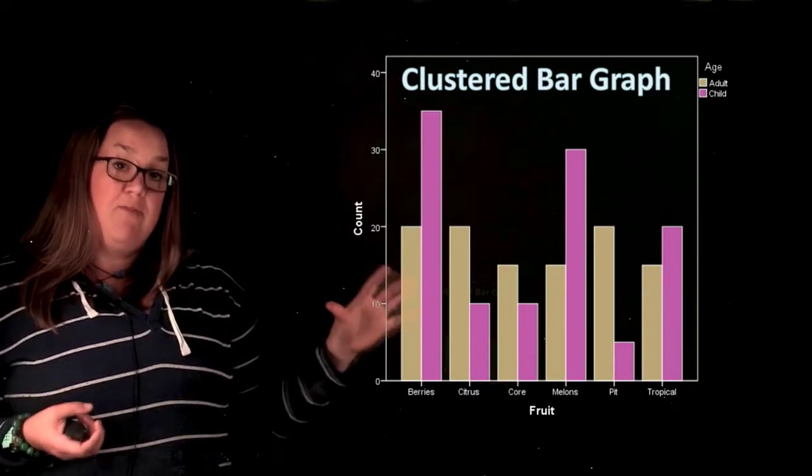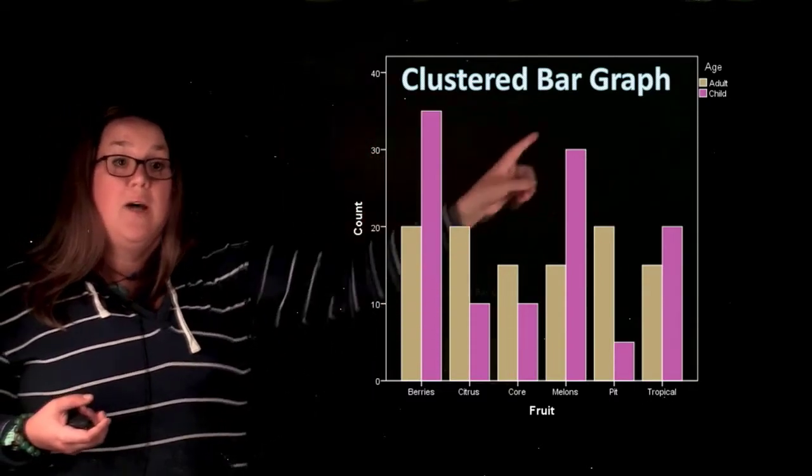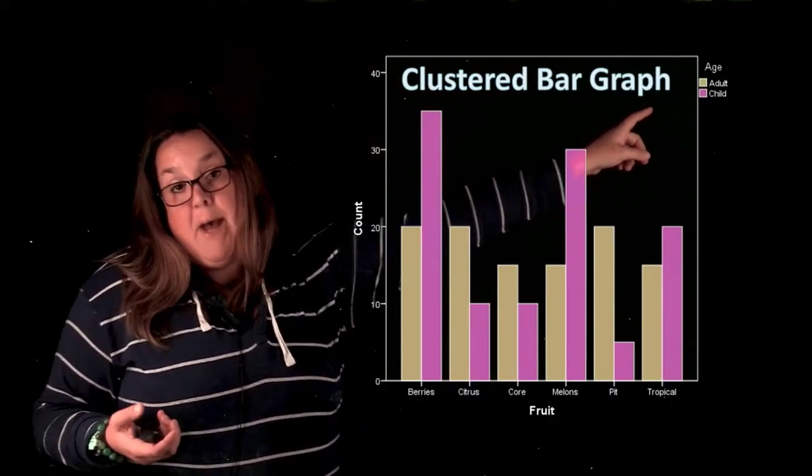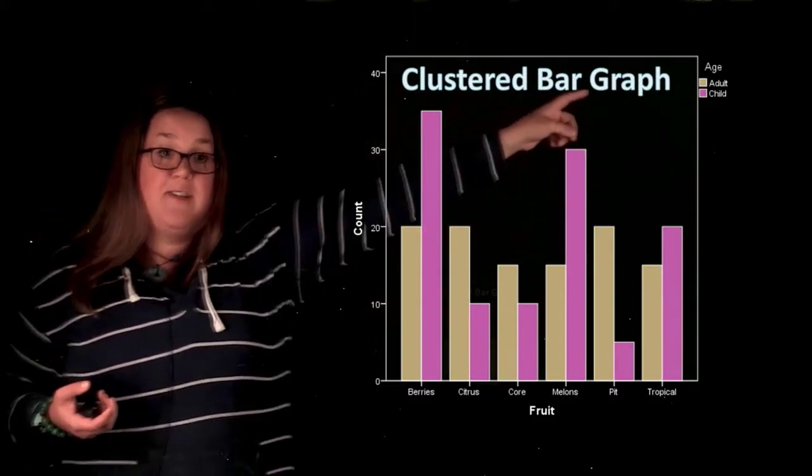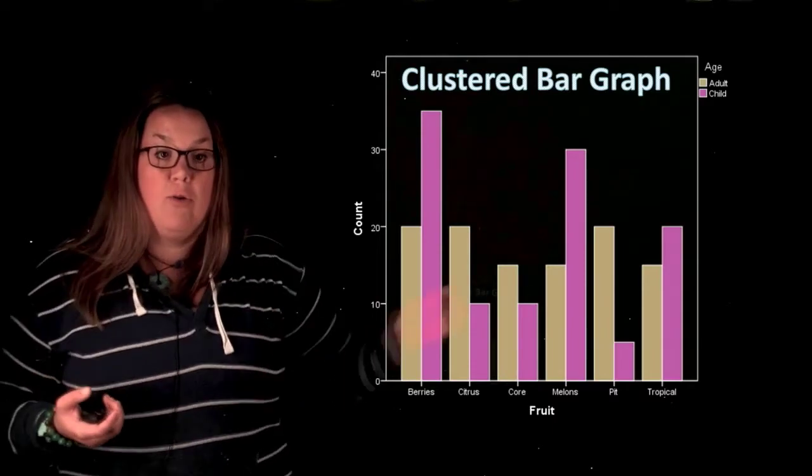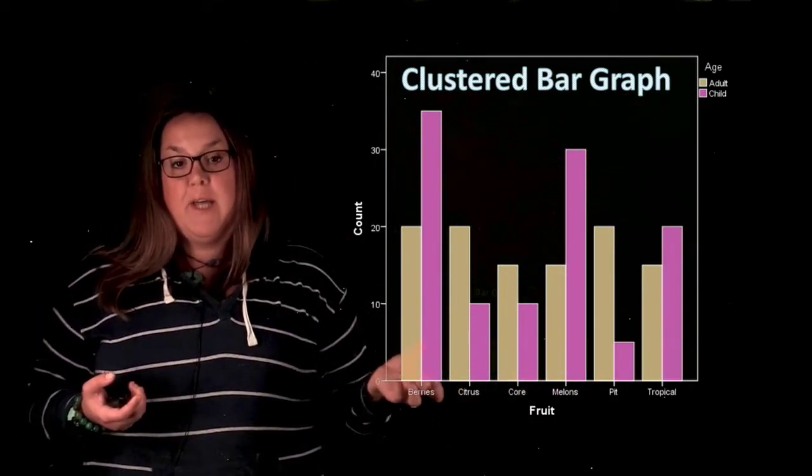So you would read the bar graph the same way. It's clustered because we have different clusters depending on the different variable that we have being represented with different colors or patterns. So it's clustered by the second variable and you can have a variety of categories. It doesn't just have to be two. You could have three categories that created the cluster.